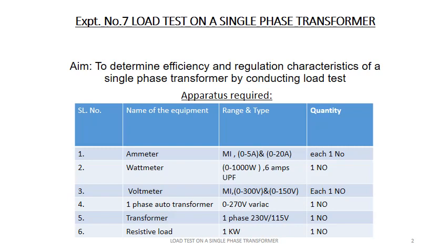The transformer consists of two electrically isolated coils and operates on Faraday's principle of mutual induction, in which an EMF is induced in the secondary coil of the transformer by the magnetic flux generated by the voltage and current flowing in the primary coil winding.